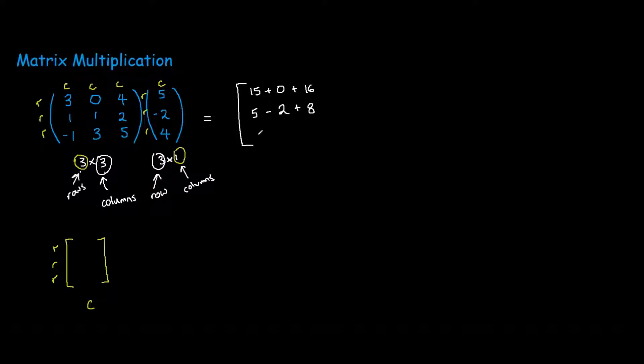For the third row of the solution, you get the third row times the column of the second matrix.